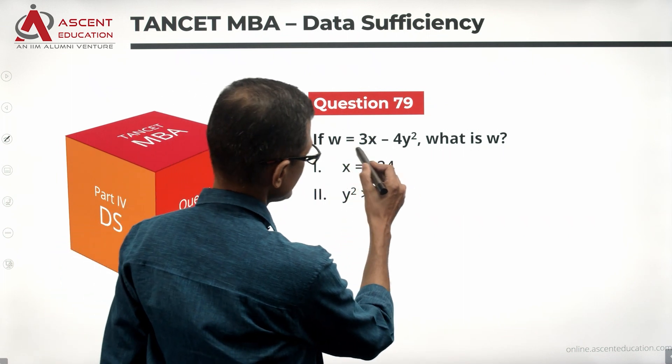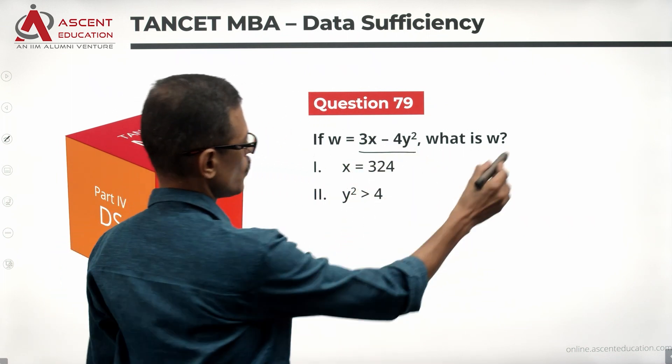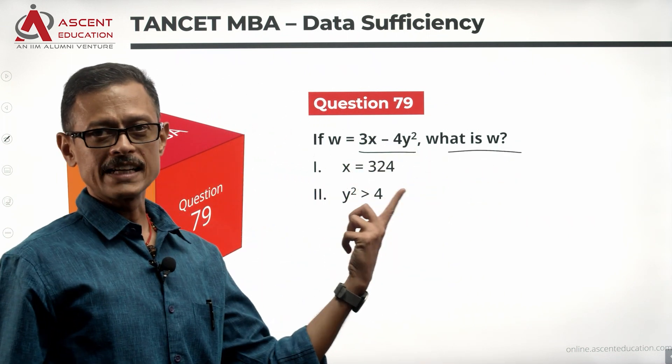The question asks: If w = 3x - 4y², what is w? We need to find the value of w.